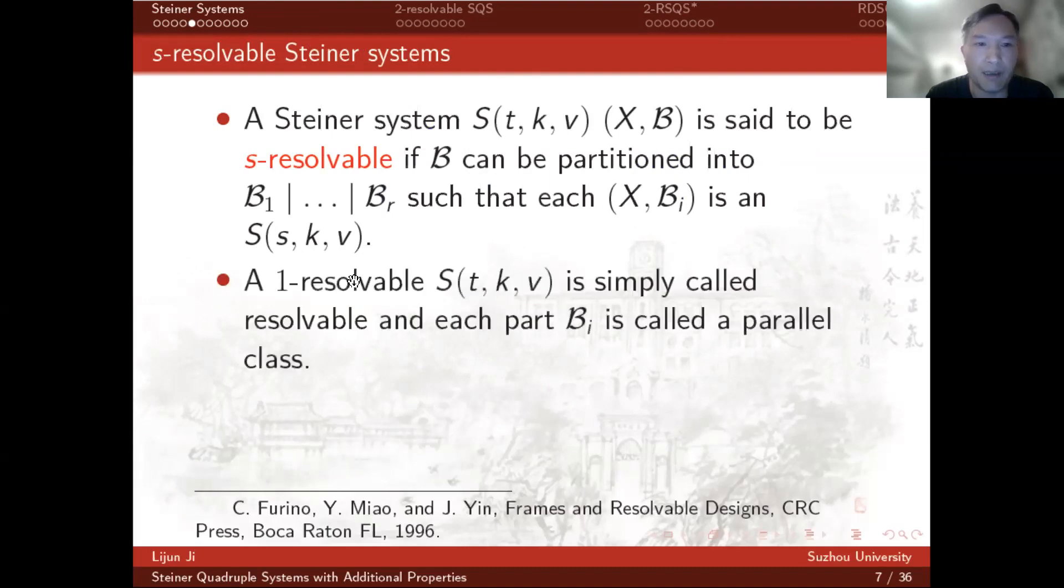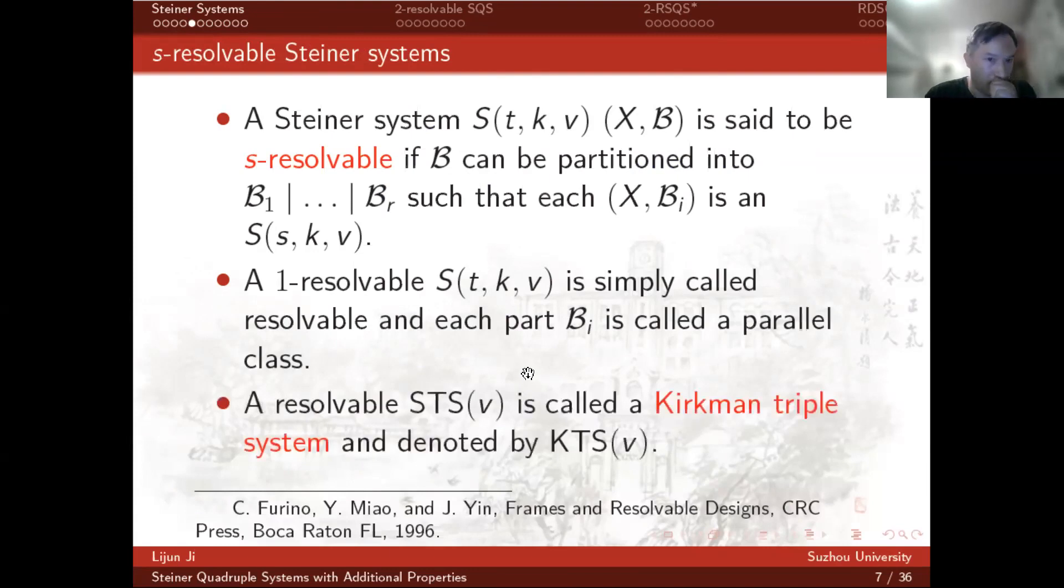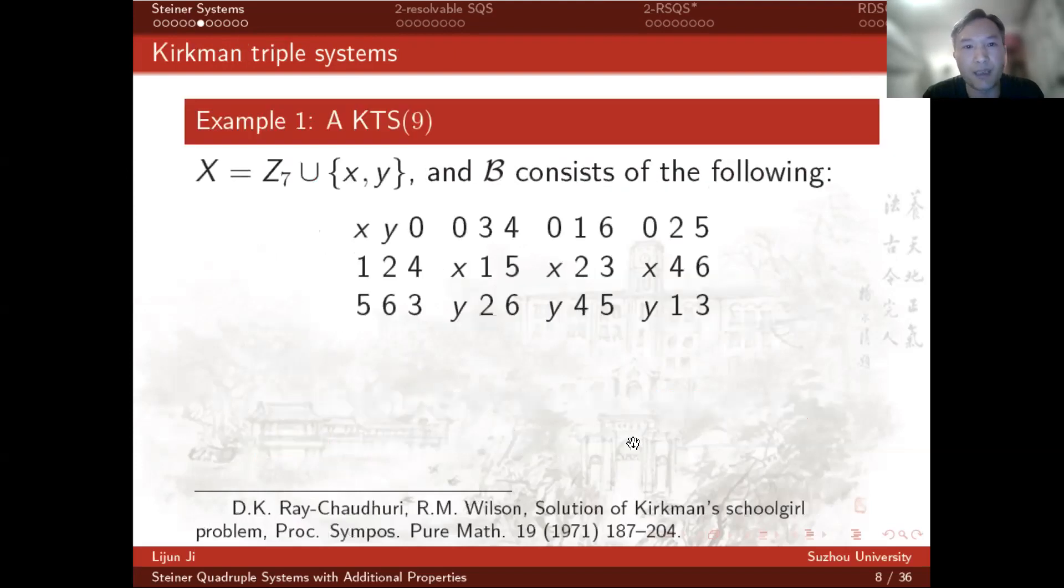Specially, a one-resolvable Steiner system is usually called resolvable, and each part B_i is called a parallel class. A resolvable Steiner triple system is called a Kirkman triple system and denoted by KTS(v). For example, a KTS of order 9 is based on this set.